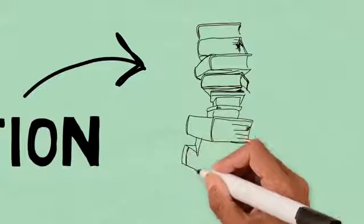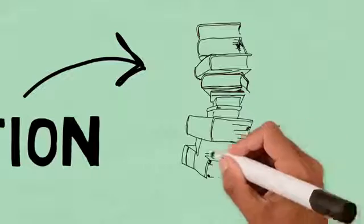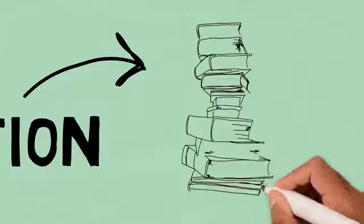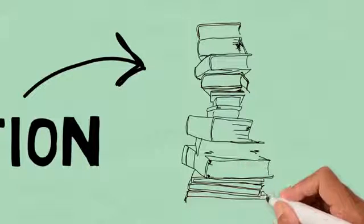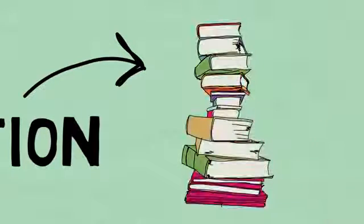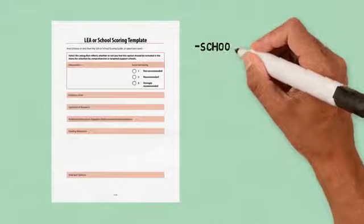The team may also review and rate sample interventions included in the guide. If the LEA or school must choose from a list, they should only rate the interventions that also appear on the list. If they have flexibility, the team may rate any or all of the sample interventions provided. The LEA or school scoring template contains fields where team members may enter the school improvement area and the name of an intervention in that area.